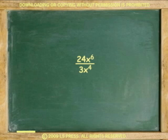For example, in here, 24 divided by 3 is 8, and 6 minus 4 equals 2. The answer is 8x squared.